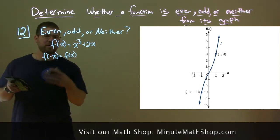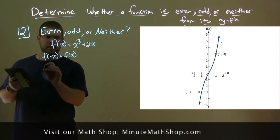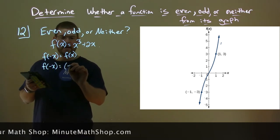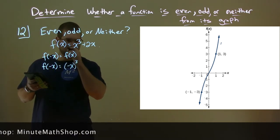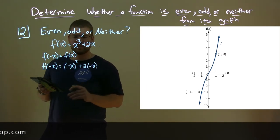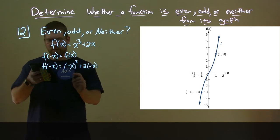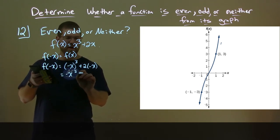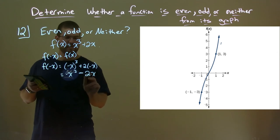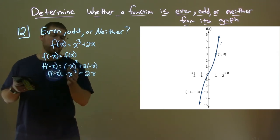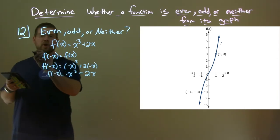Is f(-x) equal to f(x)? To do that, we need to find what f(-x) is. f(-x) = (-x)³ + 2(-x). Simplifying, we have -x³ - 2x. Are they the same as f(x)? No, they're not, so it's not even. This is our even test.